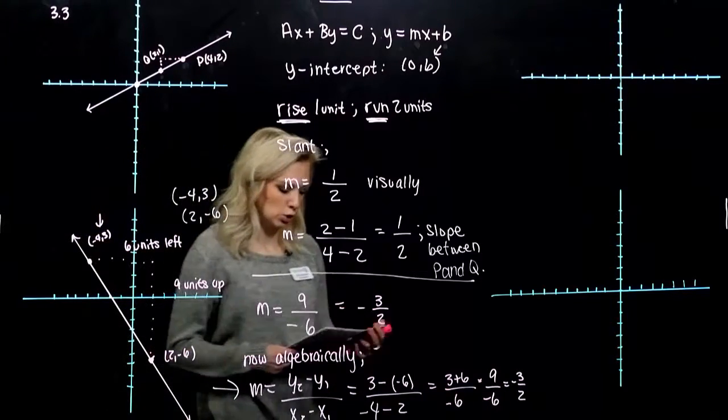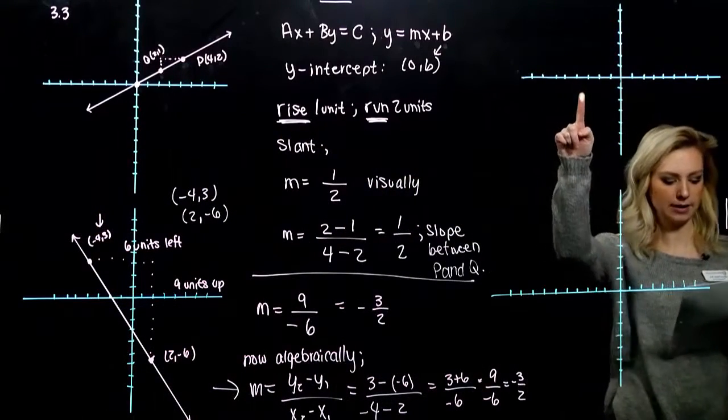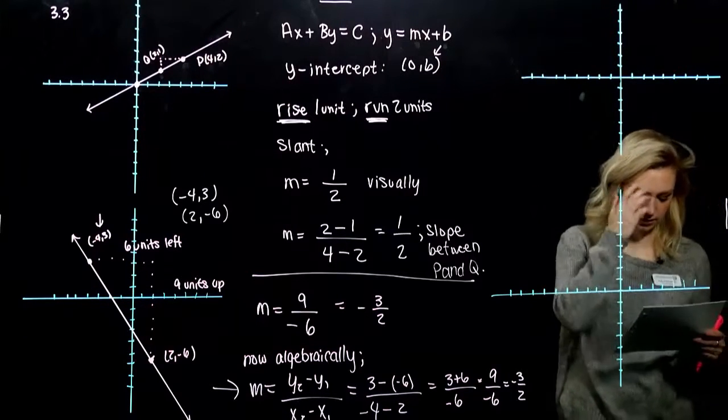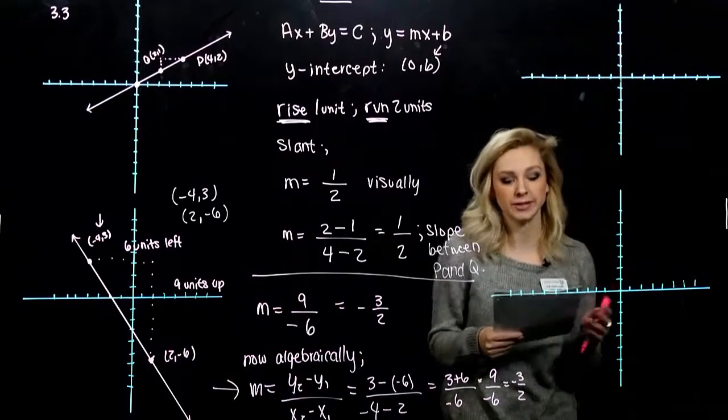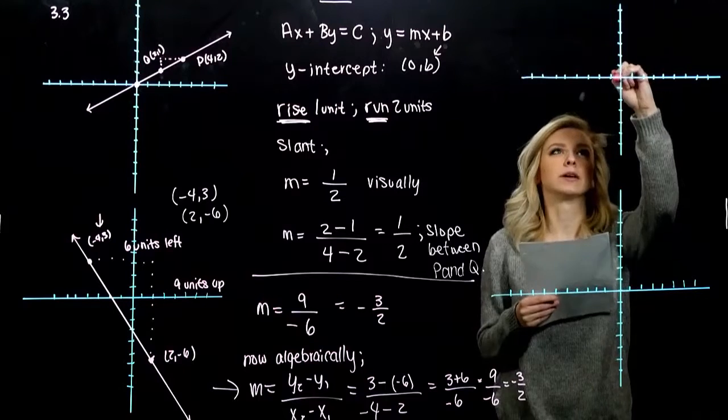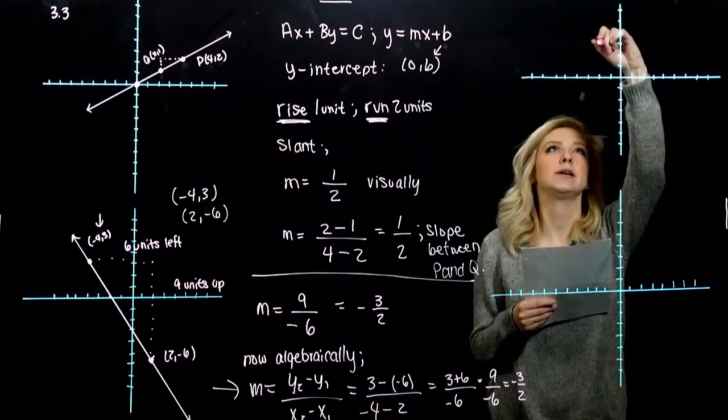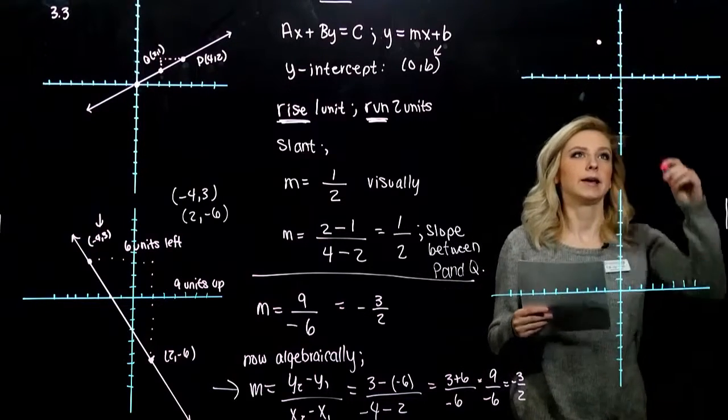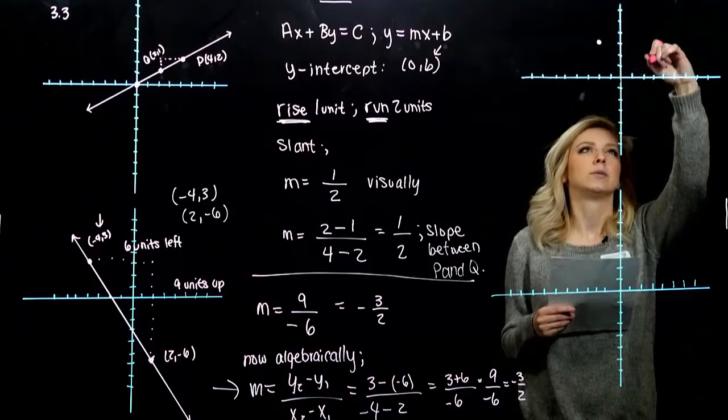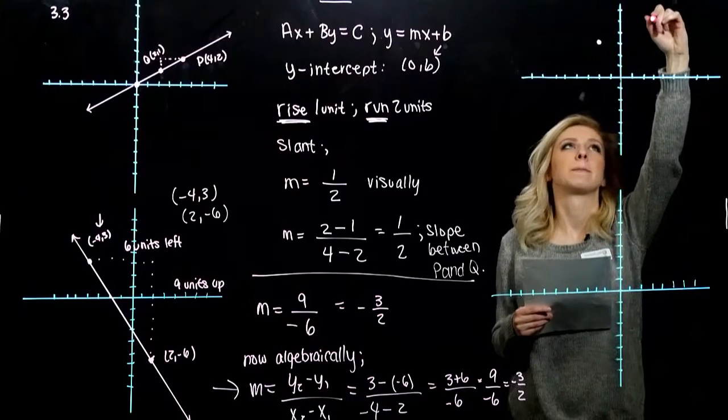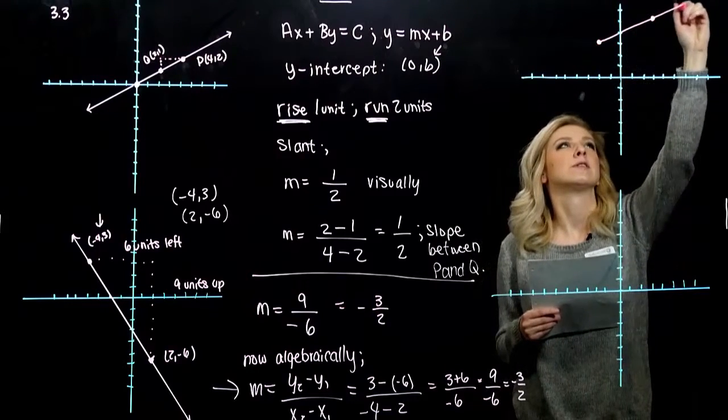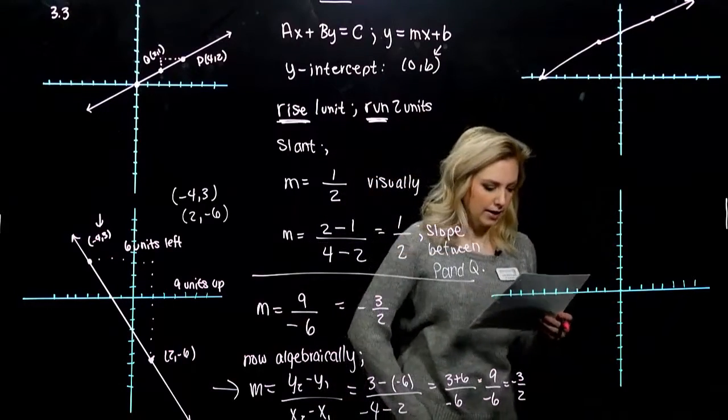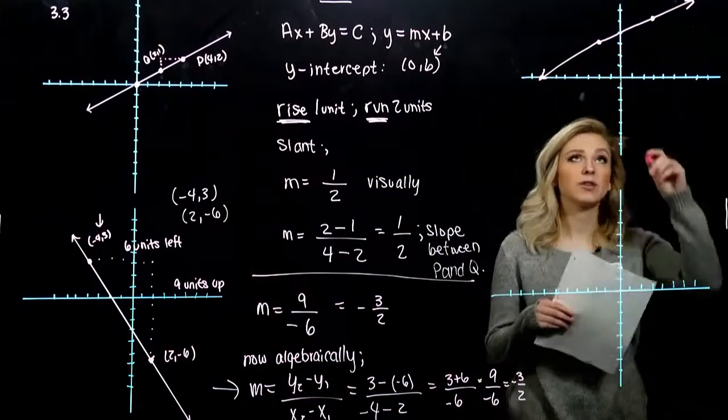Next one for you: graph the line containing the points (-2, 3) and (3, 5). Find its slope. Plot the points first. (-2, 3): minus 2, up 1, 2, 3. And (3, 5): 1, 2, 3 over, 1, 2, 3, 4, 5 up. I'm going to roughly connect the dots. And visualizing, if I start from this point, how many units do I need to rise to get to the same level as this one? It's looking like 1, 2, we have to go up.